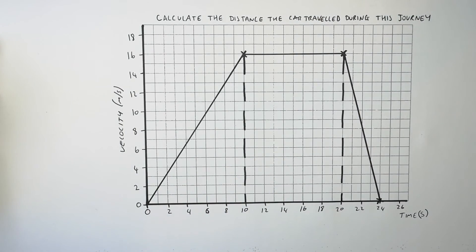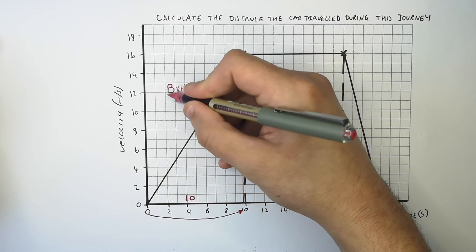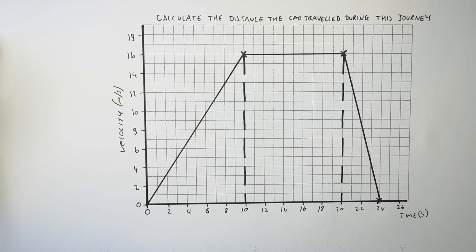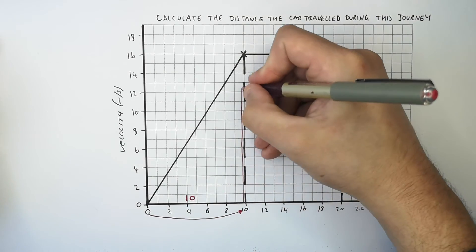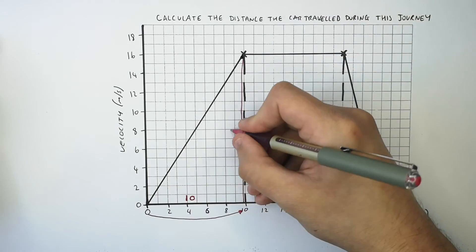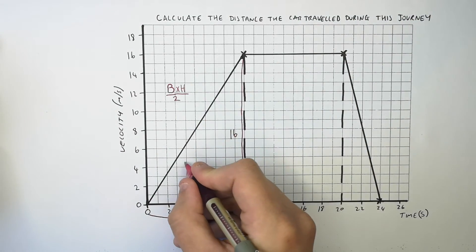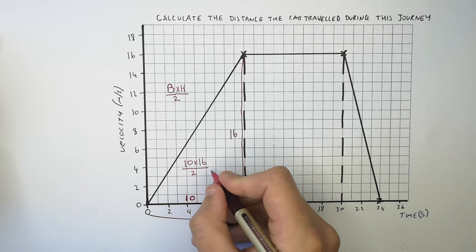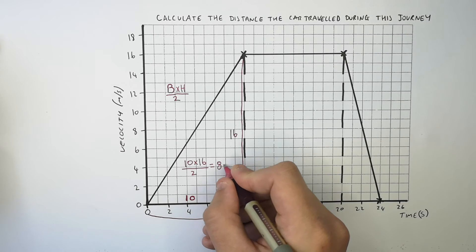To calculate the distance the car travelled while it was accelerating, you use the equation base times height divided by 2, because it's a triangle. The base is 10, the height is 16. So you do 10 times 16 divided by 2, which gives you a total distance during the acceleration of 80 metres.